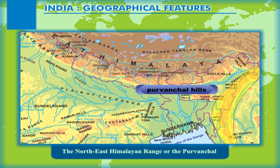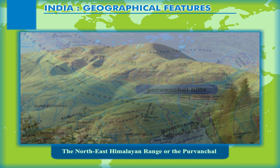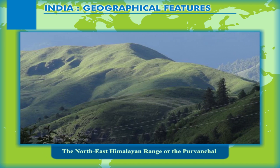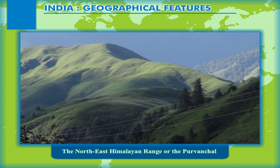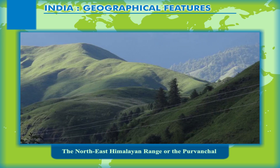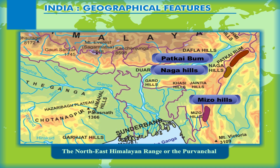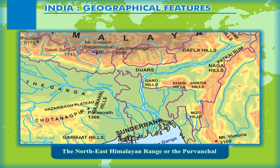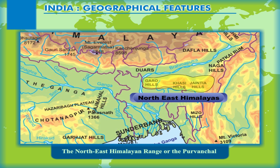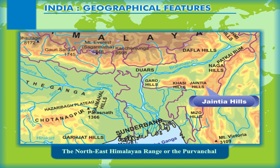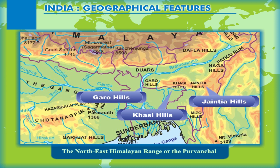The Northeast Himalayan Range, or the Purwanchal, forms the boundary between India and Myanmar. Comparatively lower in altitude than the Himalayas, they are the northeastern extension of the Himalayas and stretch in a north-south direction. The hills that form part of this range include the Patkai Bum, the Naga Hills, and the Mizo Hills. The northeast Himalayas also extend along the India-Bangladesh border in an east-west direction, including the Jaintia Hills, the Khasi Hills, and the Garo Hills.